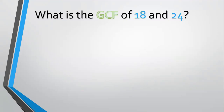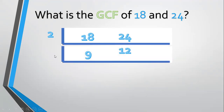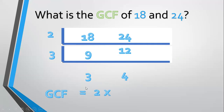Another example, what is the GCF of 18 and 24? Align 18 and 24. Divide by a prime common factor, 2. 18 divided by 2 equals 9. 24 divided by 2 equals 12. Divide again by a prime common factor, 3. 9 divided by 3 equals 3. 12 divided by 3 equals 4. 3 and 4 have no prime common factor, so stop. Then get the GCF: 2 times 3 equals 6. The GCF equals 6.